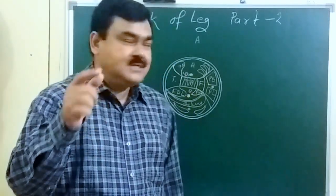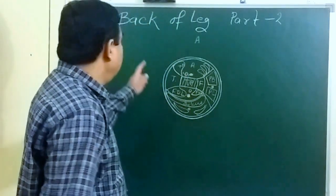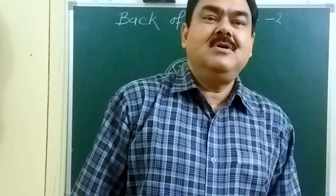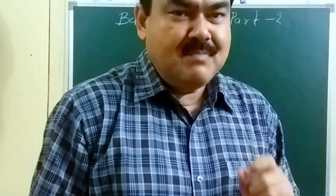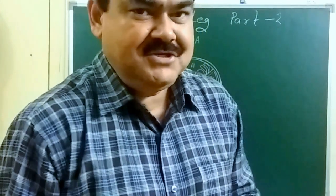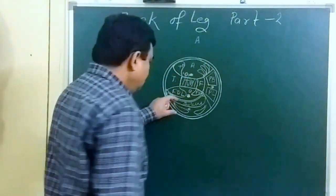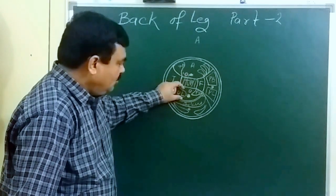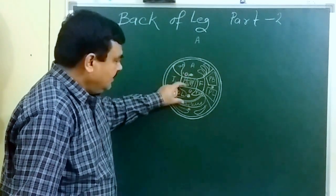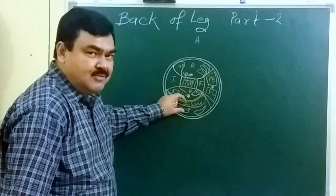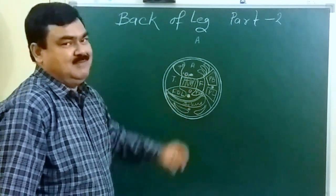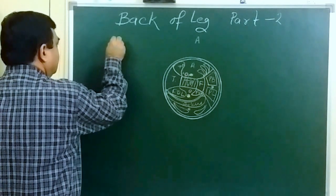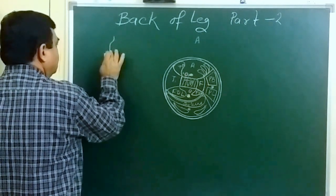Now we will discuss about the back of leg, part two. In this part we will discuss about the muscles of this region. There are three superficial muscles and two intermediate ones. First of all we will discuss about the superficial muscles.